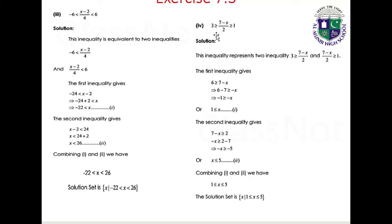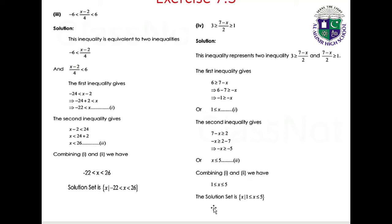Part 4: 3 greater than or equal to (7 minus x)/2 greater than or equal to 1. First inequality gives 6 greater than or equal to 7 minus x, so x greater than or equal to 1. Second inequality gives 7 minus x less than or equal to 2, so x greater than or equal to 5. Wait — combining gives 1 less than or equal to x less than or equal to 5. Solution set: {x | 1 ≤ x ≤ 5}.